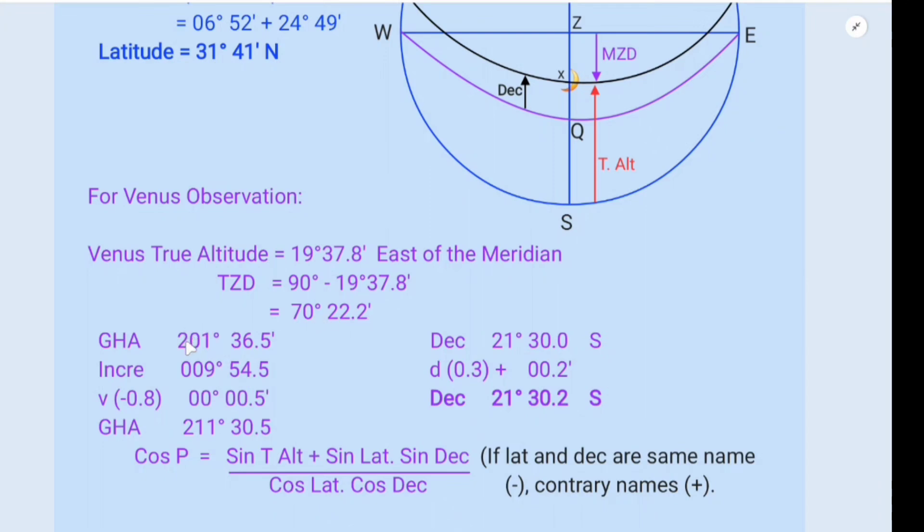So referring to the Almanac on 16th January 1992, GHA of Venus is 201 degrees 36.5 minutes. Increment is 009 degrees 54.5 minutes.